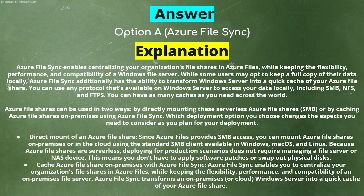Explanation: Azure File Sync enables centralizing your organization's file shares in Azure Files while keeping the flexibility, performance, and compatibility of a Windows file server. Some users may opt to keep a full copy of their data locally. Azure File Sync also has the ability to transform Windows Server into a quick cache of your Azure file share. You can use any protocol available on Windows Server, including SMB, NFS, and FTPS, and can have as many caches as you need across the world.